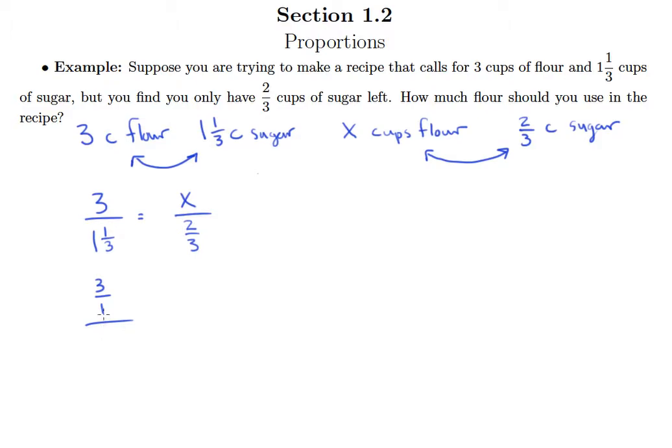So 3/1 over, 1 times 3 plus 1 is 4. So over 4/3 equals X over 2/3. So now I can go ahead and take my cross product.